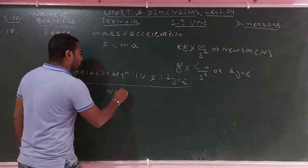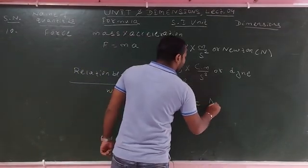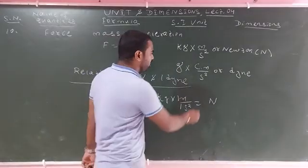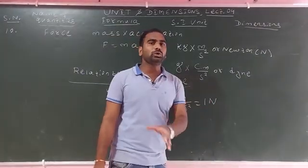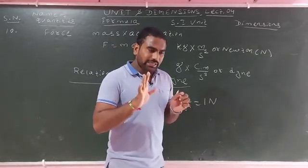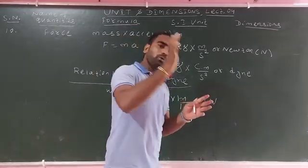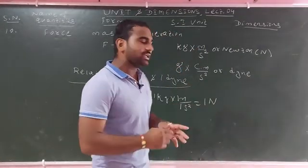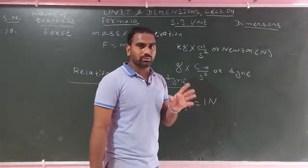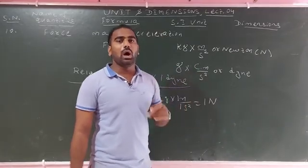1 Newton equals 1 kg into 1 meter per second square. If you have a mass of 1 kg and an object accelerating at 1 meter per second square, the force is 1 Newton. So 1 Newton is defined as the amount of force required to accelerate a 1 kg object at 1 meter per second square.